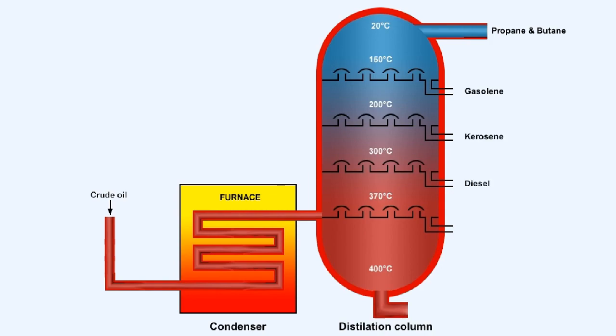Kerosene and diesel, which are the next heavier fuels, are drawn off at successively lower points on the column.